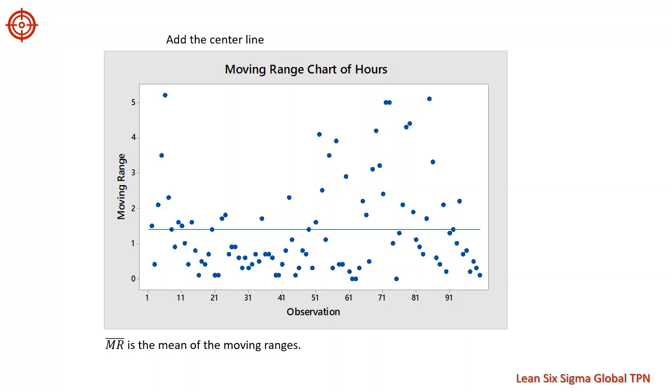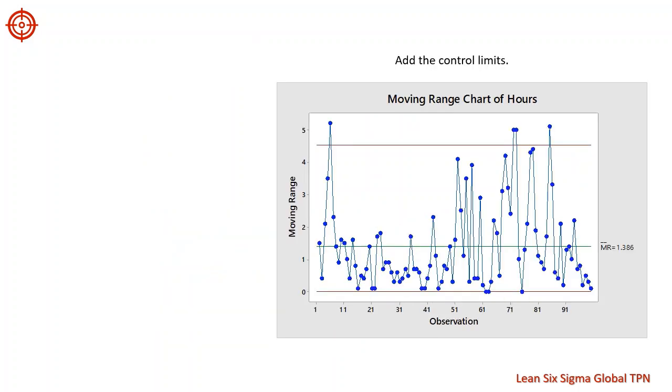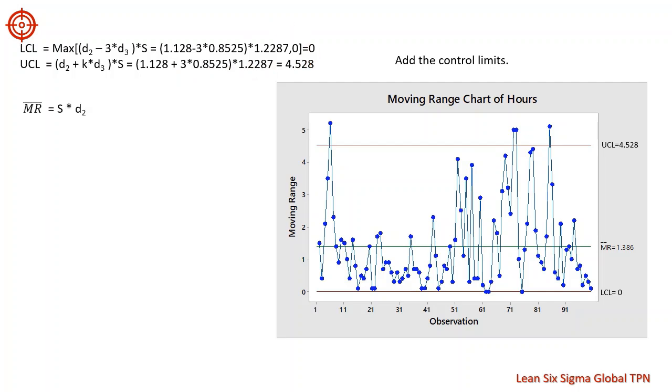Now we need to draw a center line and the control limits. The mean of moving range, MR bar, is 1.386. This is our center line. Now we add the control limits. For the completion times, the upper control limit is 4.528 and the lower control limit is 0. S is the standard estimated standard deviation or historical specified standard deviation. Here's a formula to calculate the upper control limit and lower control limit. We'll talk about this formula later.